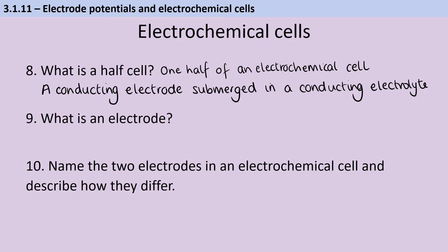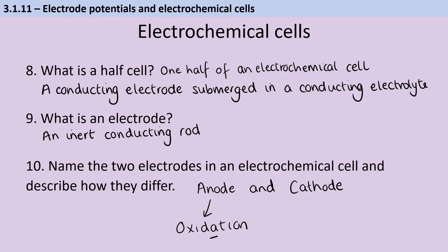An electrode is an inert or unreactive conducting rod. And the two electrodes are called the anode and the cathode. The anode is the site of oxidation, and the cathode is the site of reduction.